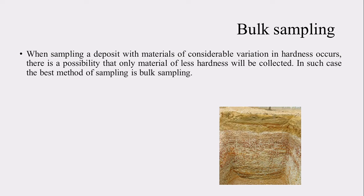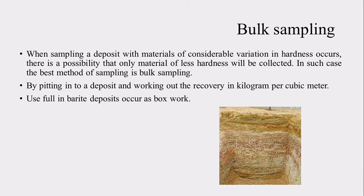The next method is the bulk sample. When a rock consists of both hard and soft minerals, breaking it for sampling causes the soft mineral to break first while the hard portion remains intact. The resulting sample does not represent the actual chemical, physical, and mechanical properties of the rock. In such cases, a pit or trench is dug and a large amount of material is taken — this is called a bulk sample. It is useful for placer deposits.